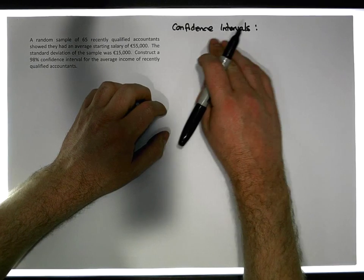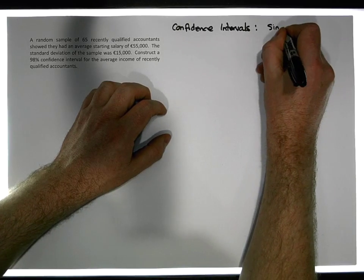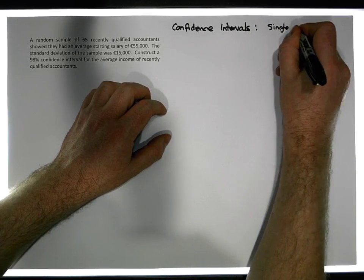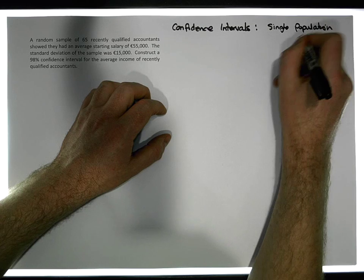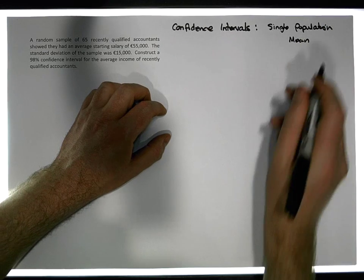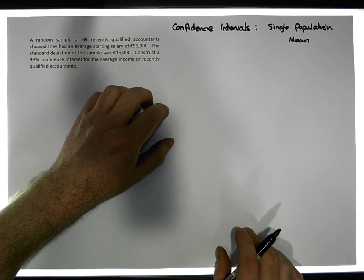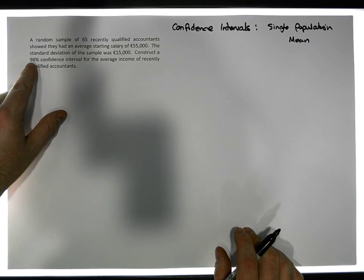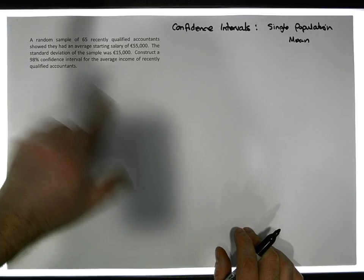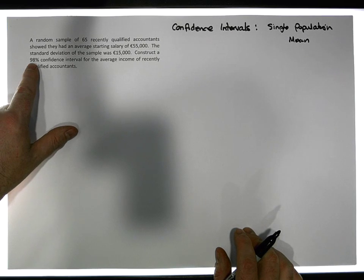This video is going to concentrate on the construction of a confidence interval for a single population mean. I have a number of videos prior to this where we constructed a 90% confidence interval and a 95% confidence interval. In this video we're going to concentrate on a 98% confidence interval.